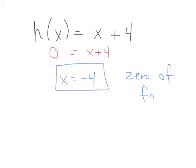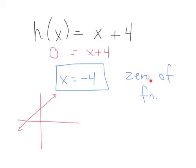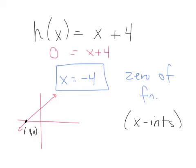Mathematically, draw a quick sketch of the function. See where it crosses the x-axis — that's negative 4 for x. So the zero of the function is also the x-intercept. That's what the zero of a function is — it's the x-intercept — because the coordinate is (negative 4, 0).